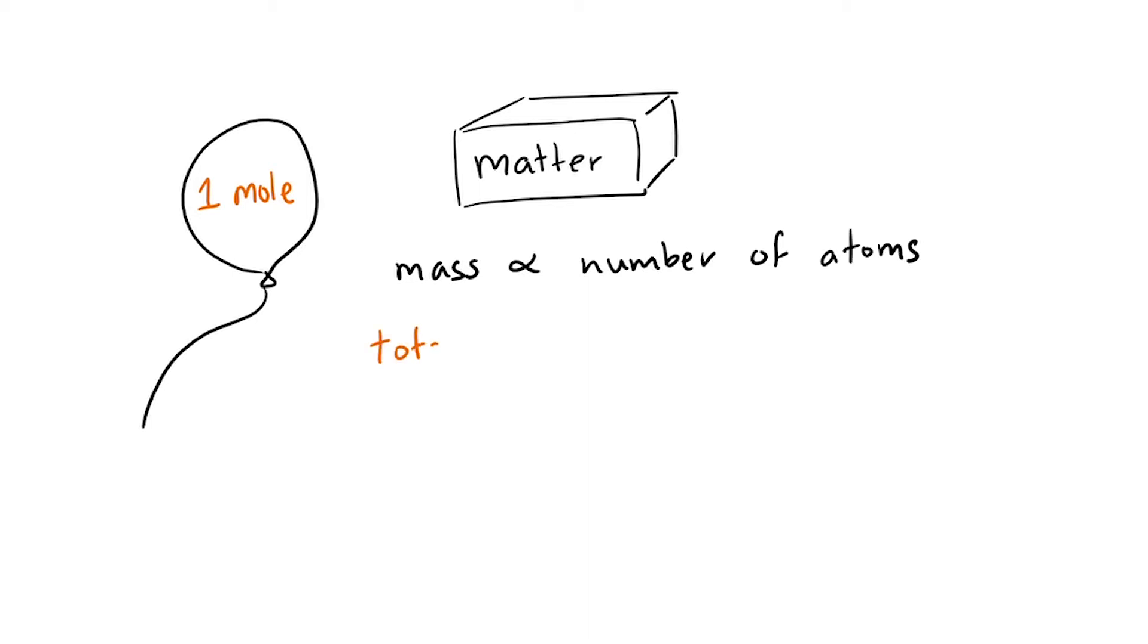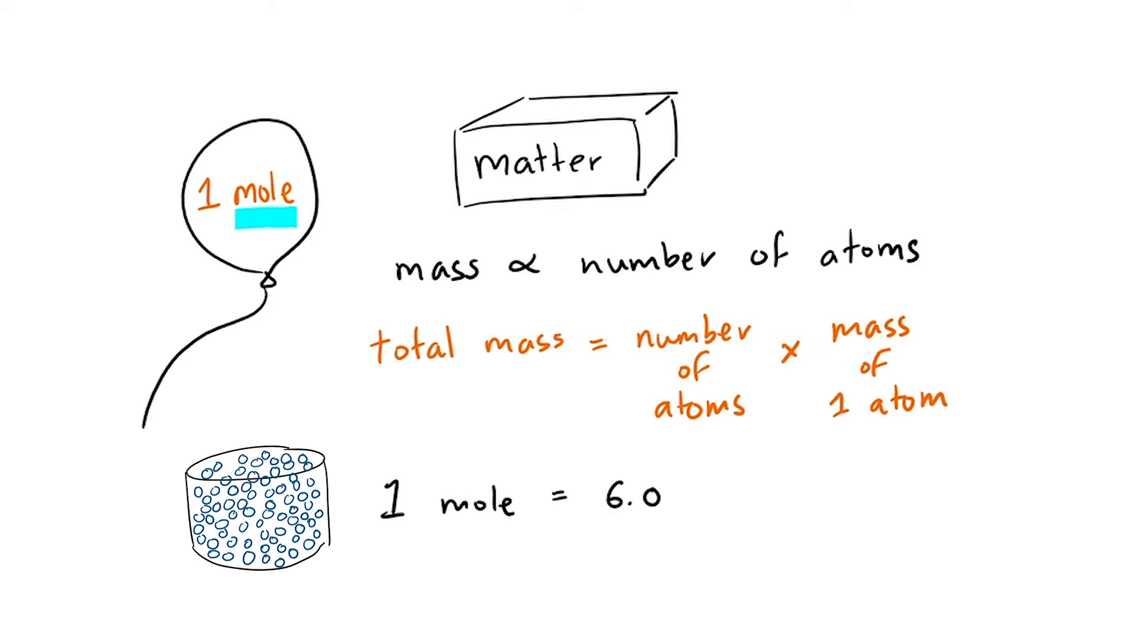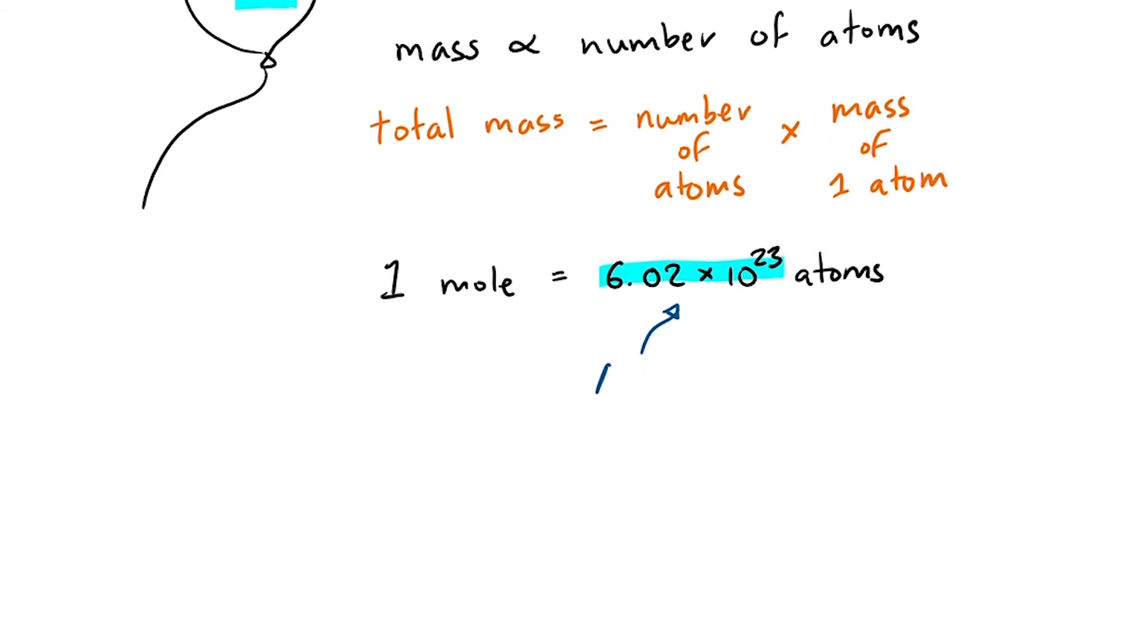We can say that the total mass of the gas is equal to the number of atoms within the gas multiplied by the mass of one single atom. But if we have one mole of a substance, we have 6.02 times 10 to the 23 particles in the substance. This number here is a constant known as the Avogadro constant.